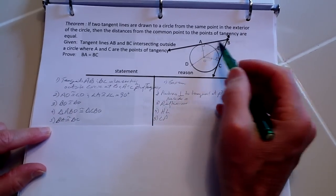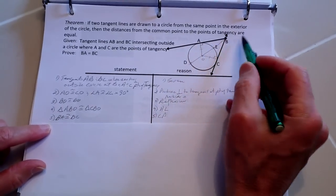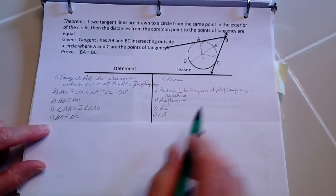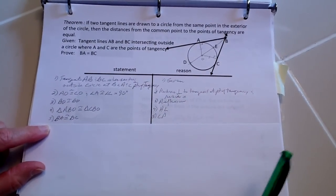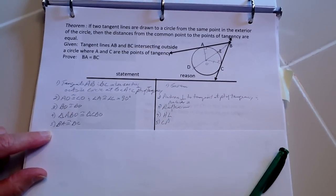From that we know by corresponding parts that AB and BC have to be equal, and that concludes our theorem.